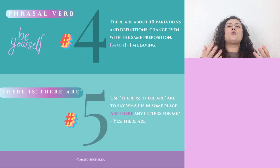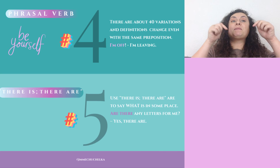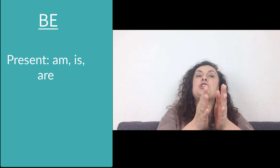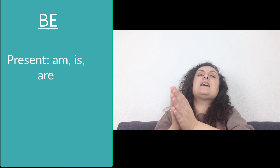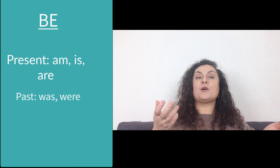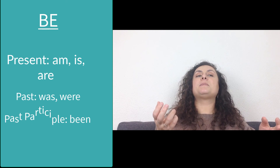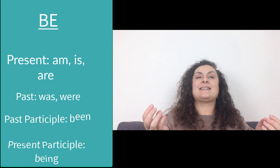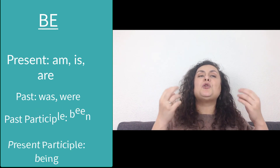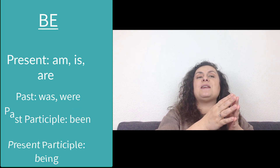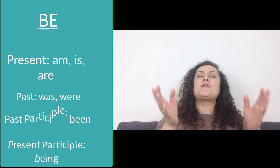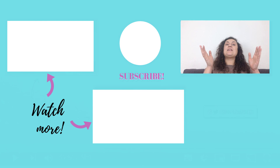Now, what are the 8 forms of the verb to be? Do you know them? Write them below! Number 1: be. In the present tense: am, is, or are — I am, he/she/it is, we/you/they are. Past tense: was or were. Past participle: been. Present participle: being. I'm sure you know all these forms and you use them — you just don't know that they are forms of the verb to be. Remember, you can watch this video again to review the topic. Please download my free ebook about the verb to be, and see you in the next video. Bye!